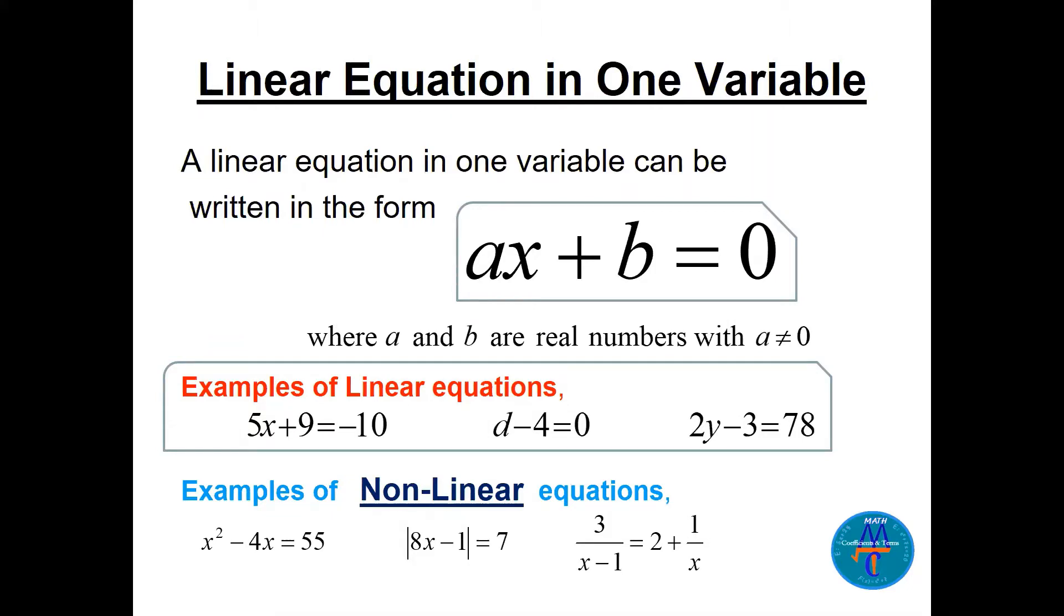A linear equation in one variable can be written as ax plus b equals zero. See, the whole idea here is x the variable can be x or y or t or d. It has a power one, like 5x plus 9 equals minus 10, or d minus 4 equals zero. These are nonlinear equations: we have x squared, absolute value, rational, cube, logarithms, exponential.